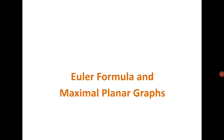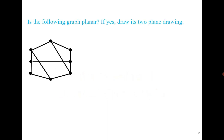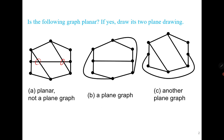In the last class we introduced planar graphs. Recall that a graph is planar if we can draw it without edge crossings. You can see that there are two edge crossings here, but we can easily draw this graph without any edge crossings.